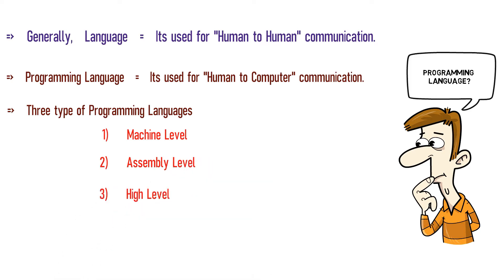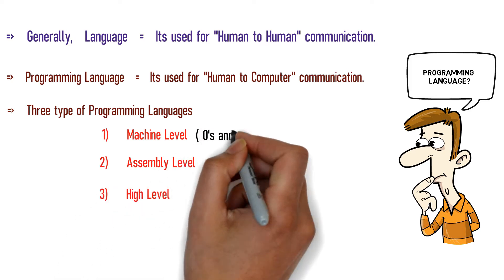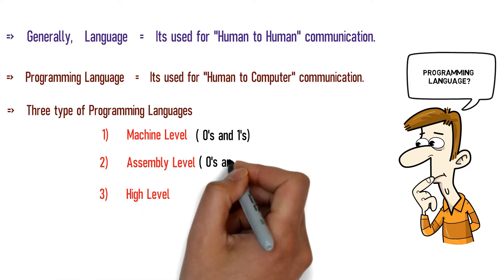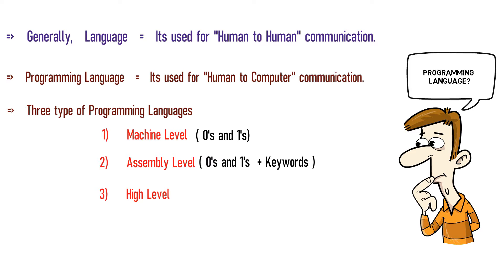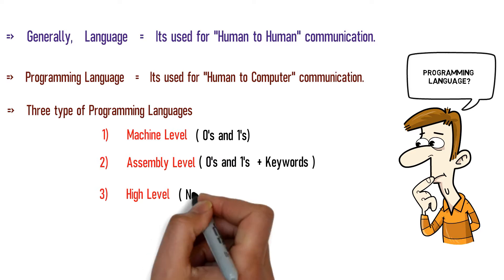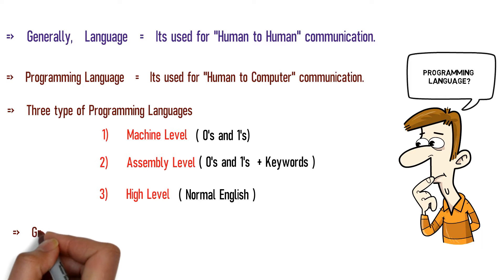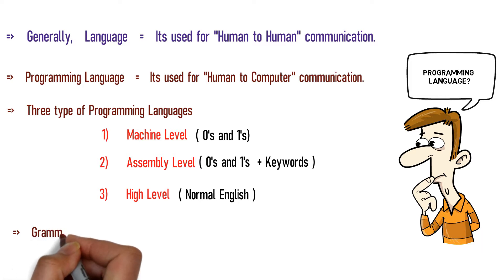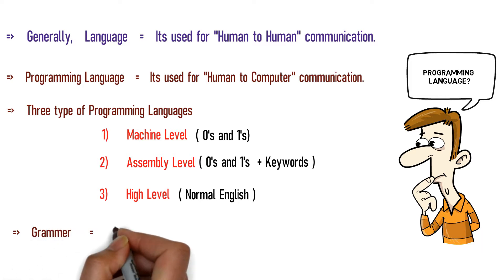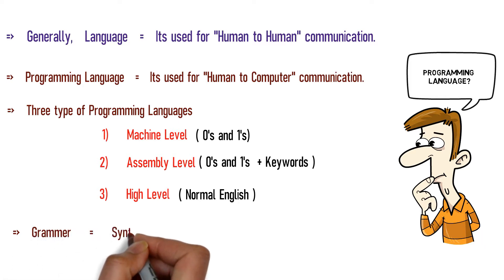Machine level is zeroes and ones. Assembly level uses a few keywords. High level uses normal English. The rules of a programming language are called syntax.